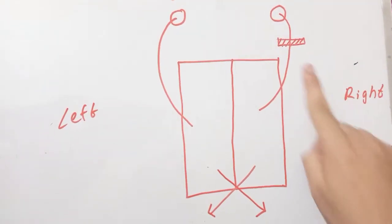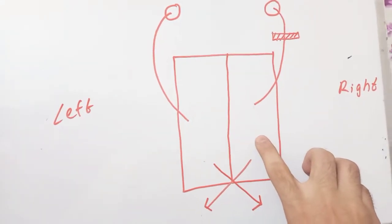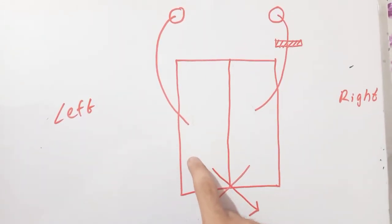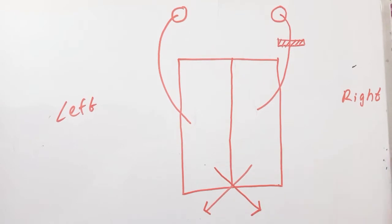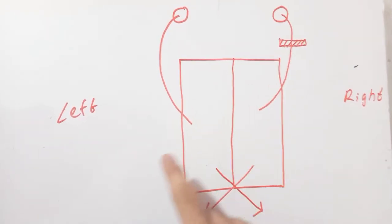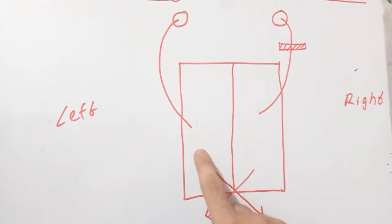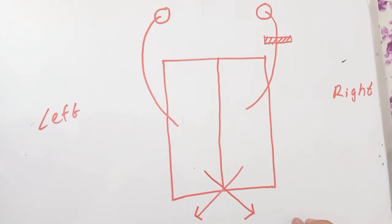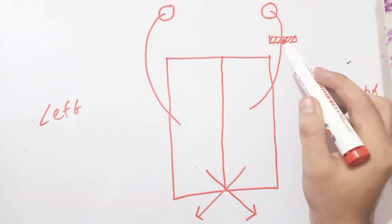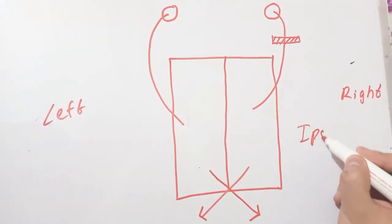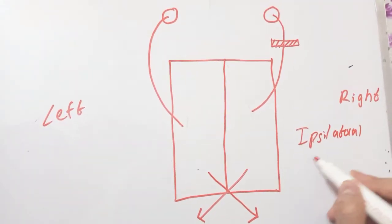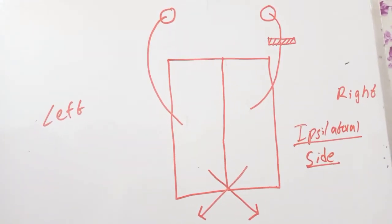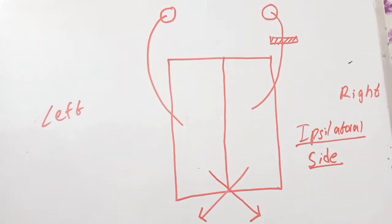When the lesion is on the right side, the right-sided muscles of the tongue will be paralyzed along with the right-sided genioglossus muscle. But the left-sided genioglossus and all the other muscles of the left side are totally normal. So when the right side is paralyzed and the left side is normal, the left-sided genioglossus will contract and pull the tongue towards the right side. The tongue will deviate towards the ipsilateral side — the same side as the lesion.